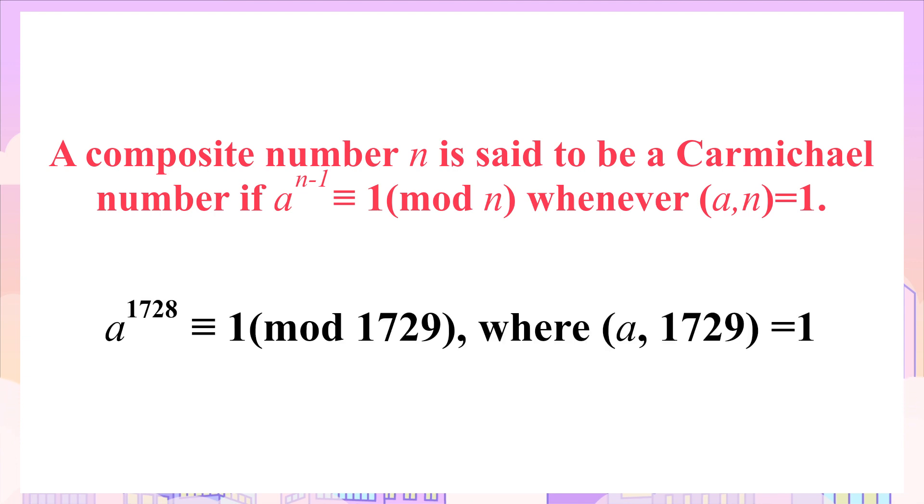So from this definition, we have to check if for any integer a, whenever a and 1729 are relatively prime, a to the power 1728 is congruent to 1 modulo 1729.